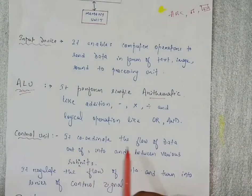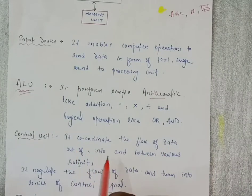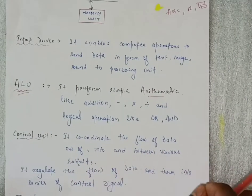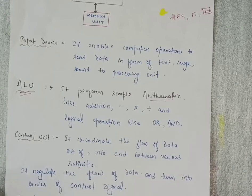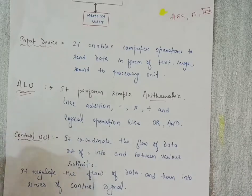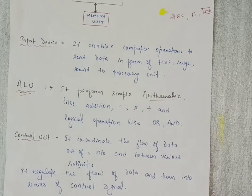After that, control unit comes to the picture. What does control unit do? It coordinates the flow of data - it coordinates the data flow out of, into, and between various subunits.